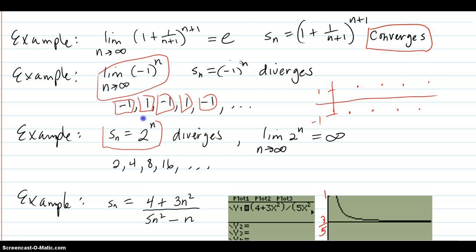Here's another example. 2 to the n, that diverges in the way that it blows up. 2, 4, 8, where n equals 3, 16. It's going to infinity.